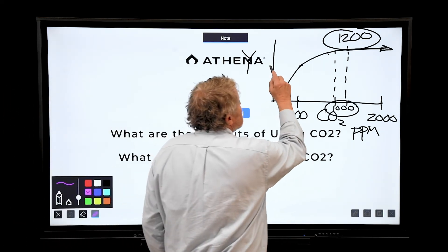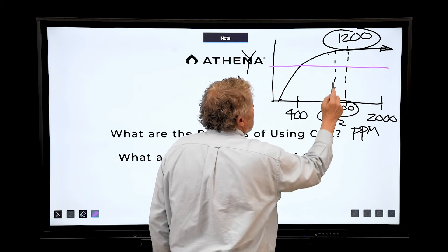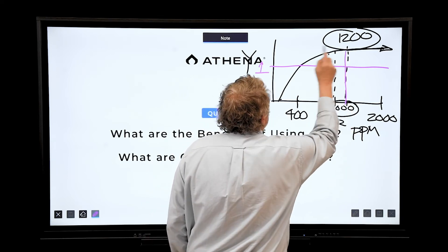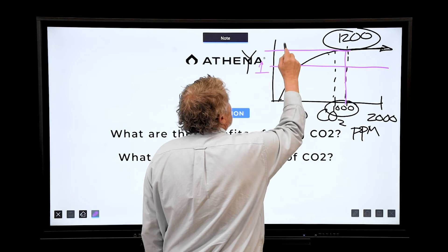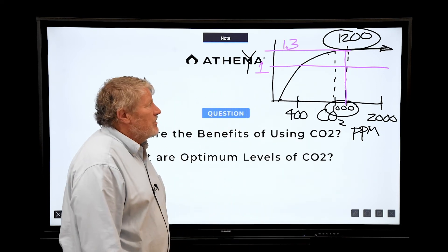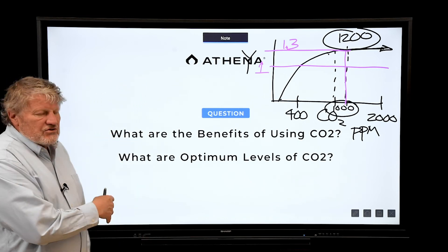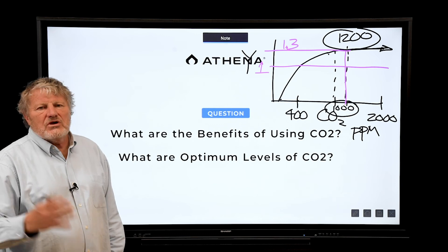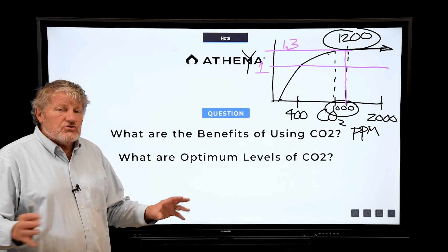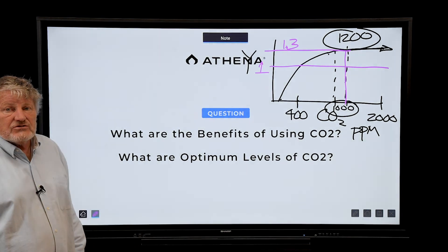To emphasize this: the yield at 400 ppm is 1.0, and the yield at 1200 ppm is 1.3 — that's a 30% increase in yield from elevated CO2. It's so cost effective, everybody should be using elevated CO2. It also closes stomates and reduces transpiration, so that's another value of elevated CO2.